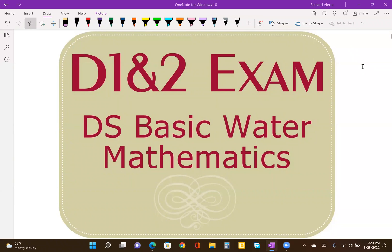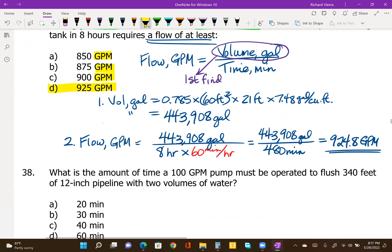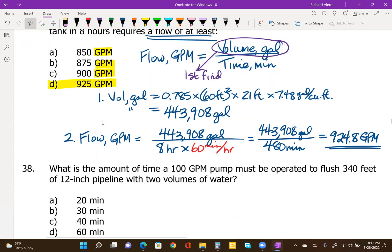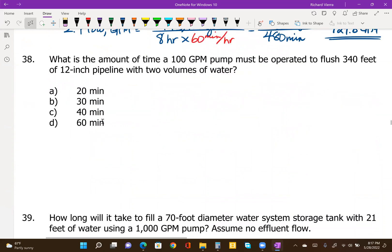Welcome to Water Opsert School's Distribution System Operator Exam Preparation Series for Grades 1 and 2. We're not always solving for flow rates. A lot of times we're given a flow rate, like in problem number 38, a 100 gallon per minute pump, and they're asking us to calculate an amount of time. All the answers are given in minutes.